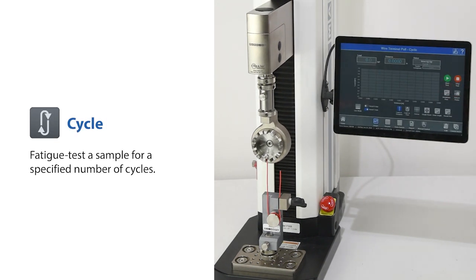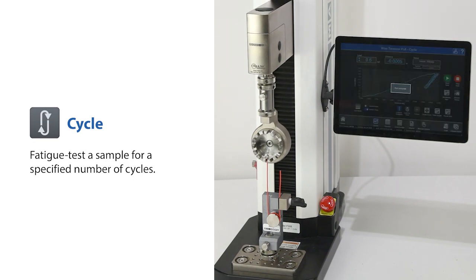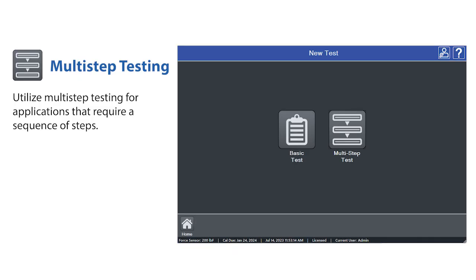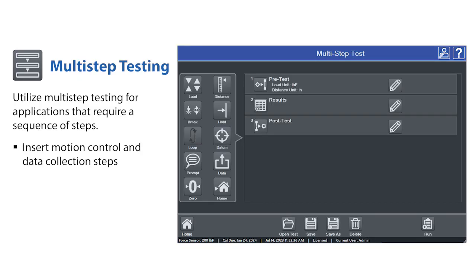A cycle test is used to fatigue test a sample for a specified number of cycles. A multi-step test is used for applications that require a sequence of steps.